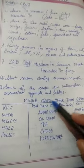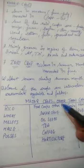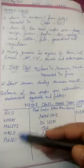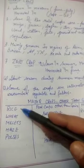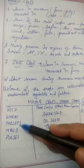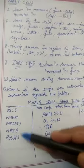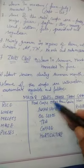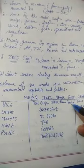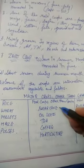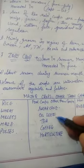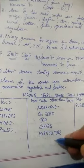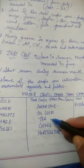The major crops of India grown include grain crops such as rice, wheat, millet, maize, and pulses. Food crops other than grain include sugarcane, oilseed, tea, coffee, and horticulture crops.